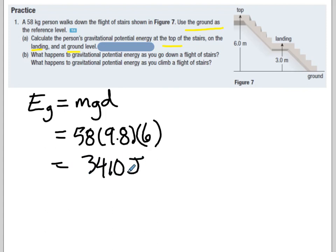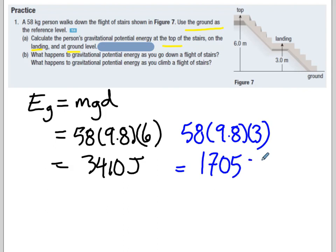If we switch to the landing, then we have the exact same thing, only with 3 meters. So we should have half of that, 1705 joules. And then lastly, when we're on the ground, because we're on the ground, our d equals 0, and we would have 0 joules.